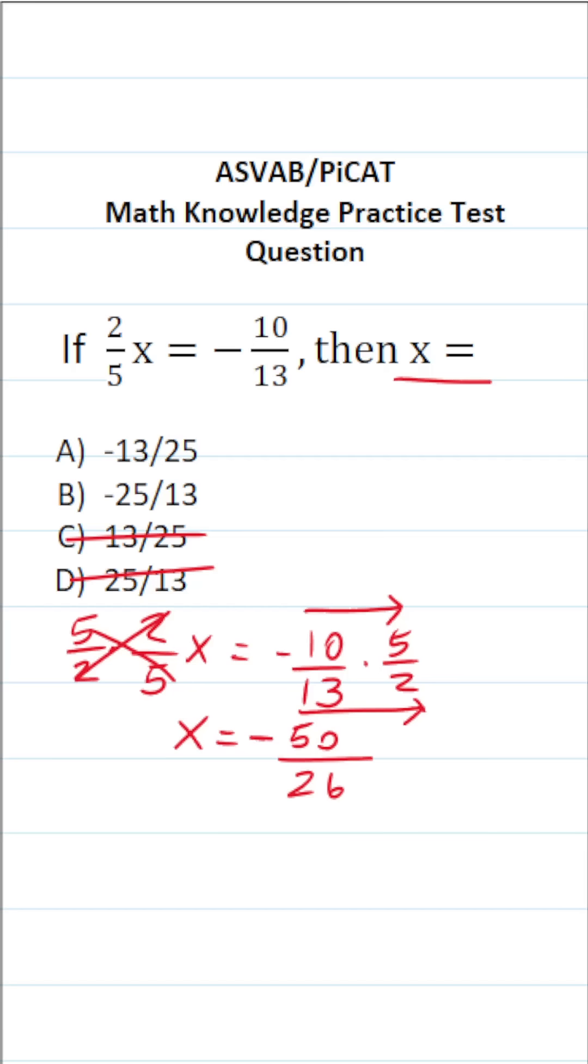This isn't an answer choice because, as you can imagine, we can reduce this fraction. More specifically, we should be able to say that 50 and 26 have a common factor of 2. So we can reduce this by a factor of 2. 50 divided by 2 is 25. 26 divided by 2 is 13.